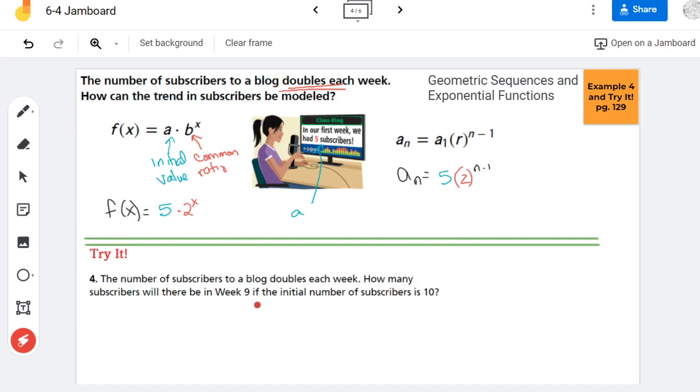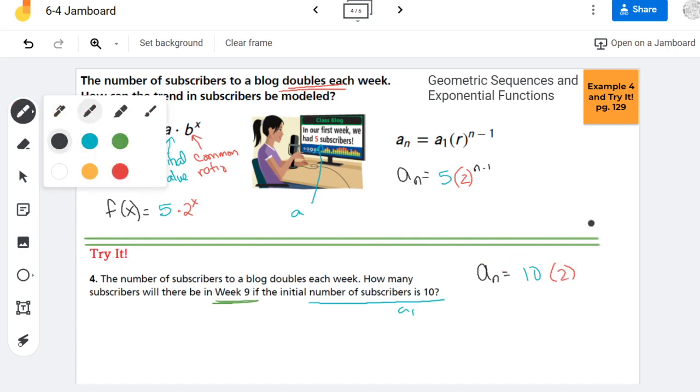So now on the try it, they're actually giving us a number. So first it says the initial number of subscribers is 10. So that's my a value, I should say a₁. I'm going to be using sequences here. And then it's asking about week 9. So first let's write our equation out. I know my equation is aₙ. My initial subscribers is changing from 5 to 10, but everything else is staying the same. So there's our formula for this.